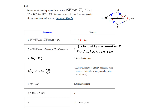We therefore know AC = DF by segment addition. Then triangle ABC ≅ triangle DEF by angle-side-angle congruency. Because the triangles are congruent, their corresponding parts are also congruent — which proves that line segment BC is congruent to line segment EF.